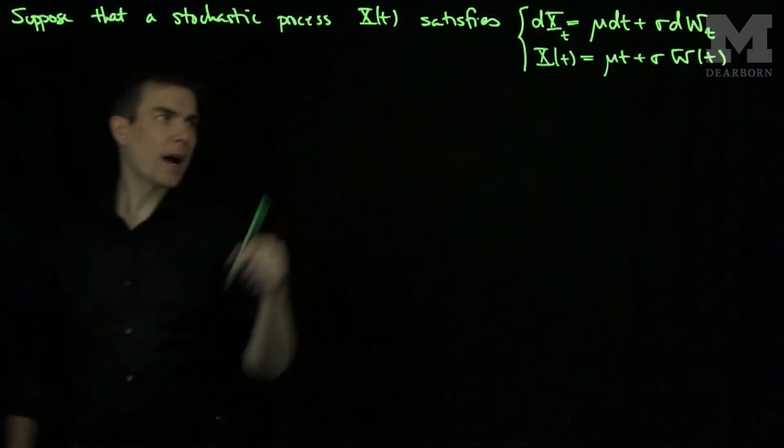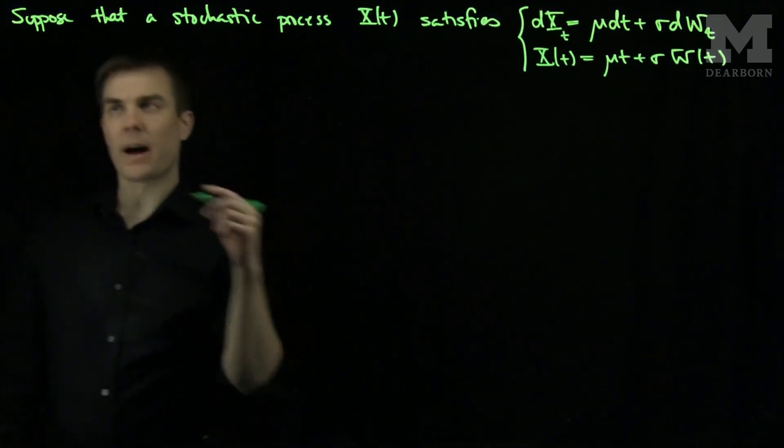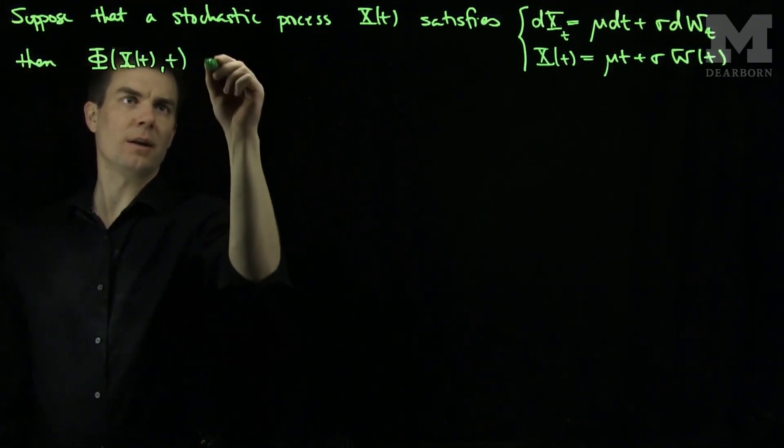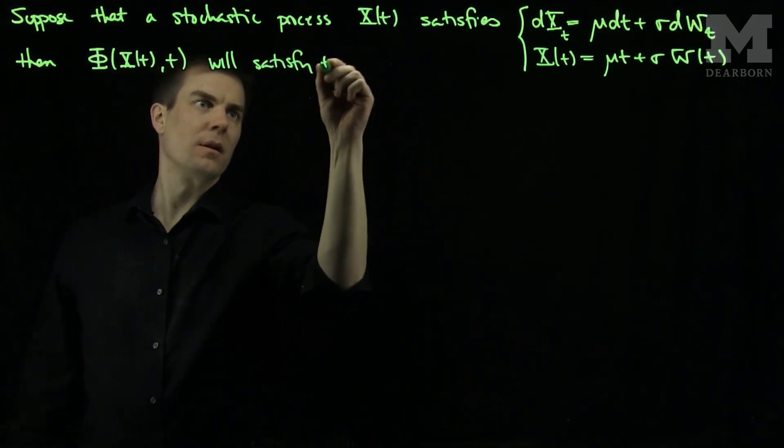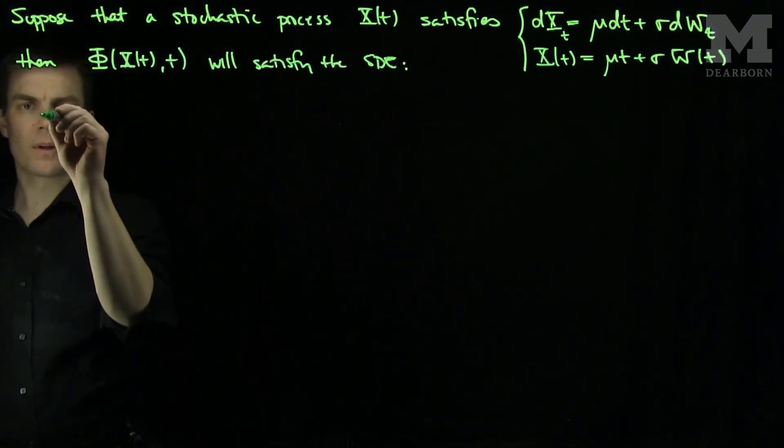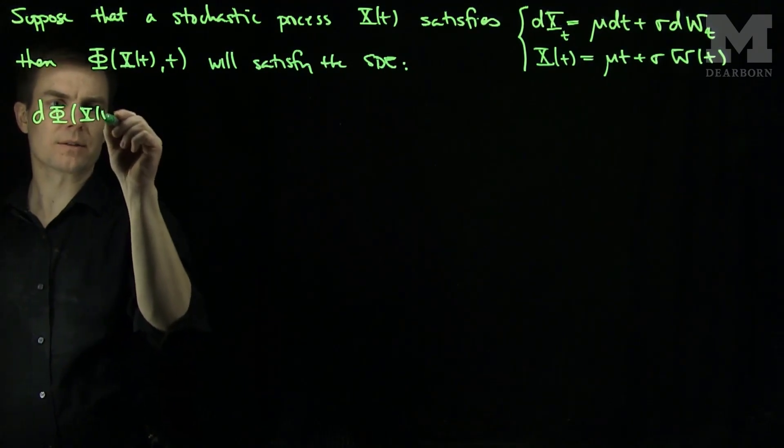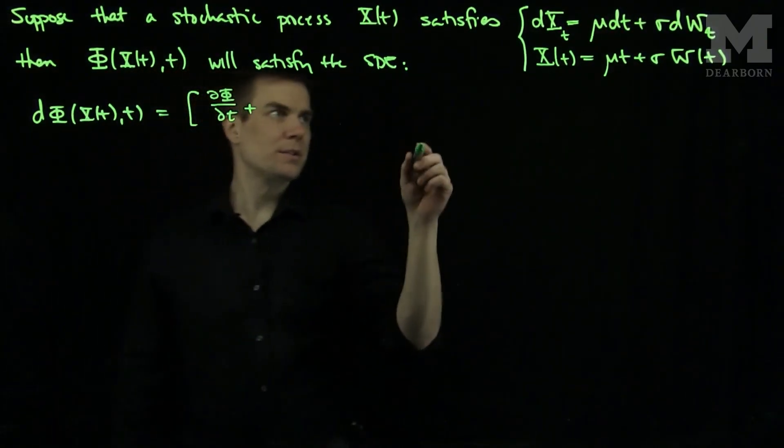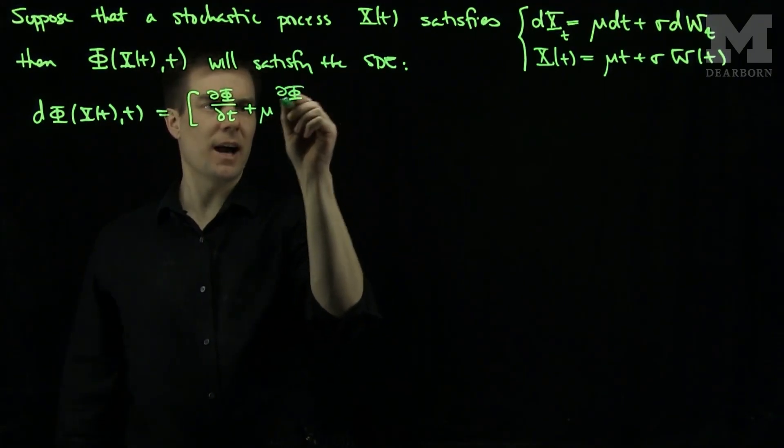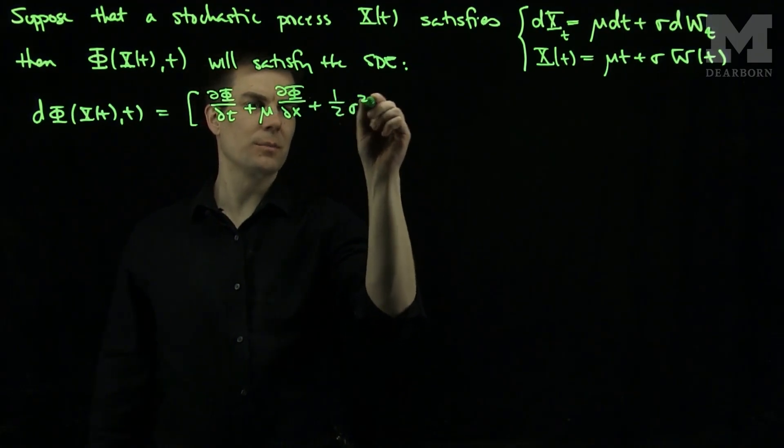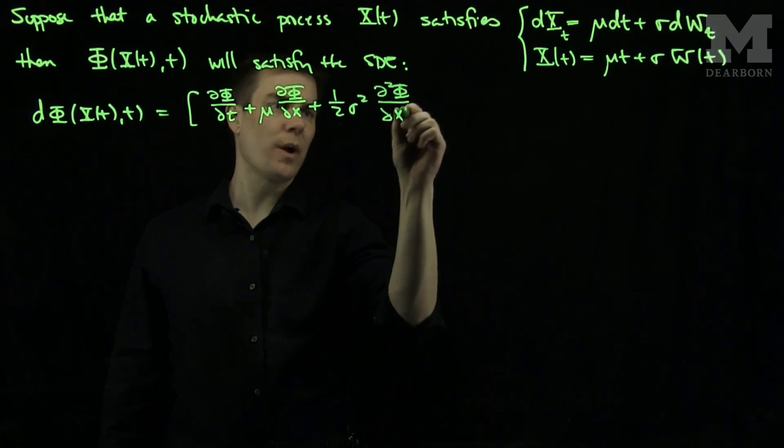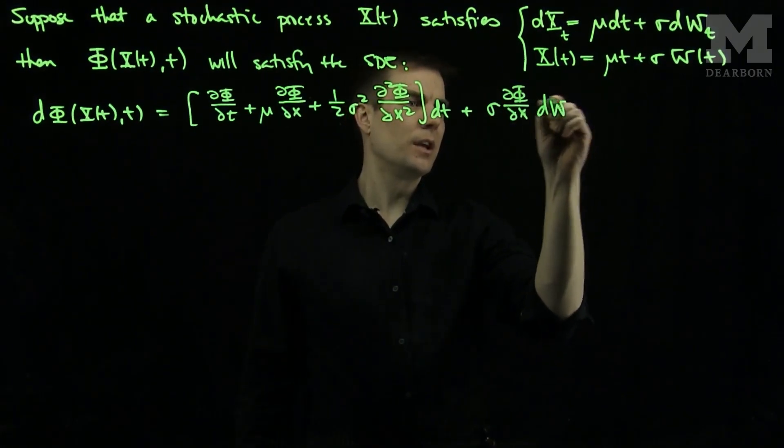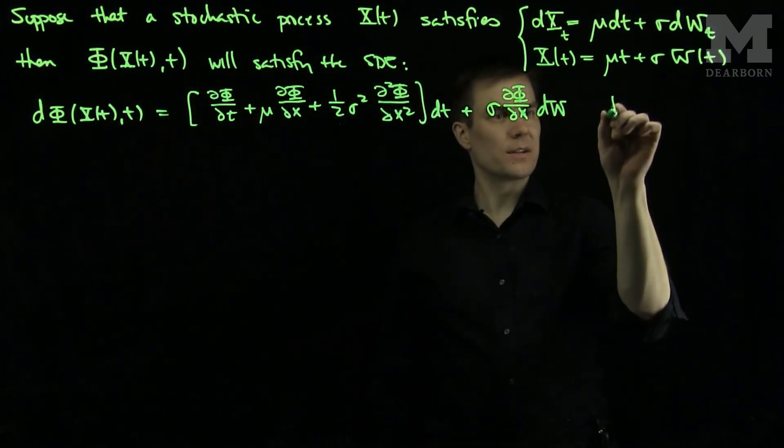So if my process x follows this structure, then any function of x, then φ(x(t),t) will satisfy the SDE: dφ(x(t),t) = ∂φ/∂t + μ∂φ/∂x + (1/2)σ²∂²φ/∂x² dt + σ∂φ/∂x dw. This formula over here is referred to as the Itô Lemma.